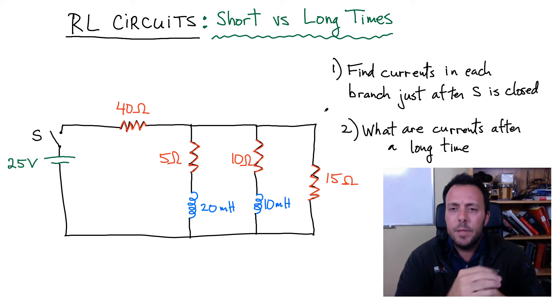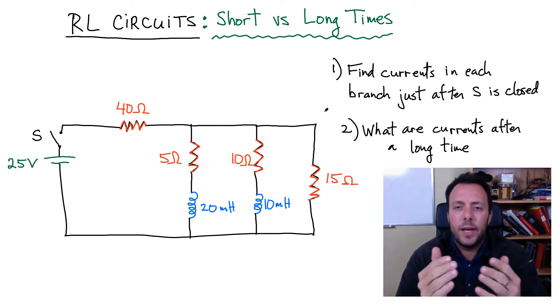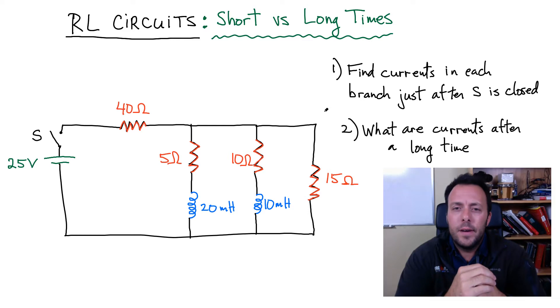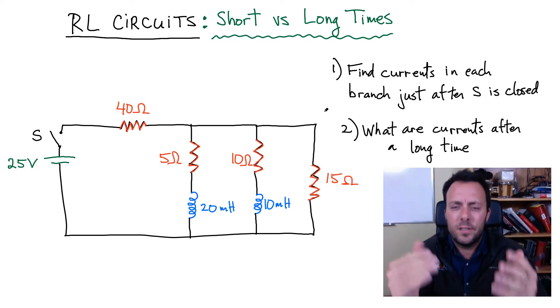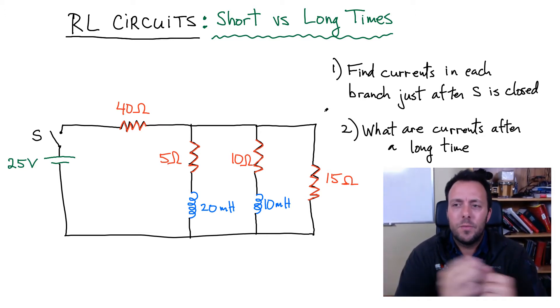The second time limit is what happens after you close the switch and you wait a long period of time, then you measure the current in each branch. Let's solve this problem and see how you would treat both limiting cases. These are pretty easy problems, it's important just to understand a few concepts and you'll get them right all the time.